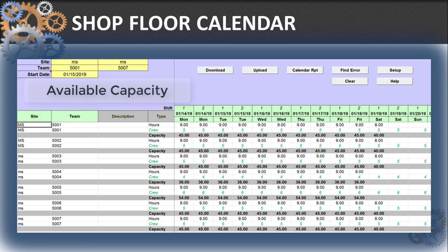For example, the work completed on a production line with five people can be different from the capacity of the same production line with only one crew member. With this tool, you use productivity, working hours, and crew size to get an accurate picture of your actual capacity.